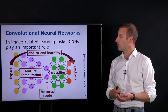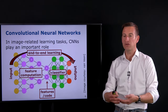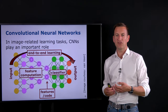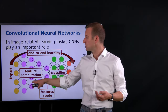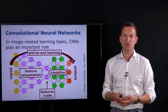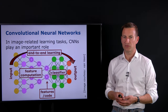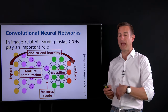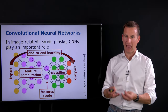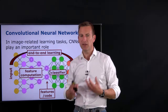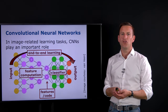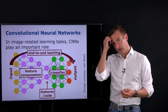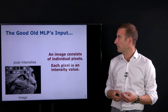This is an end-to-end learning approach because the input is the raw image and the output is the raw label, and it learns features by itself — we're not providing features explicitly to the system. Let's go back to the MLP to understand its input, and this will lead us to CNNs and why using CNNs is actually a good idea for image-related tasks.